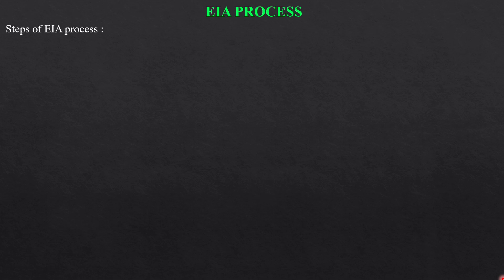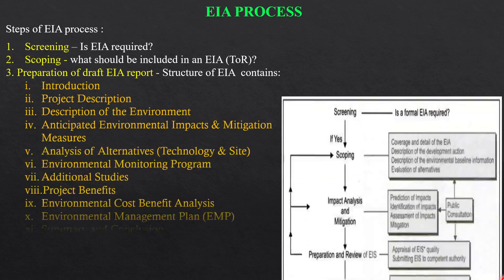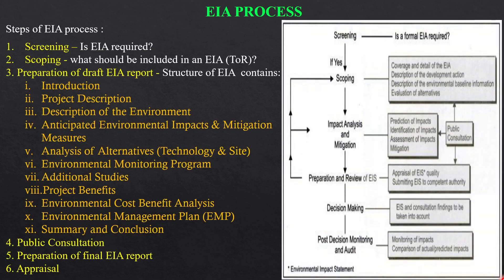There are six steps of the EIA process: screening — whether EIA is required; scoping — what should be included in an EIA report; step three is preparation of the draft EIA report; four is public consultation; five is preparation of the final EIA report; and six is appraisal.